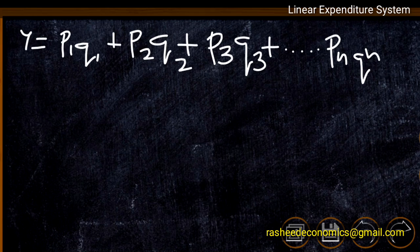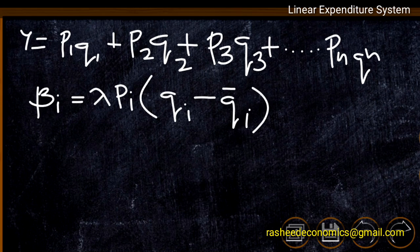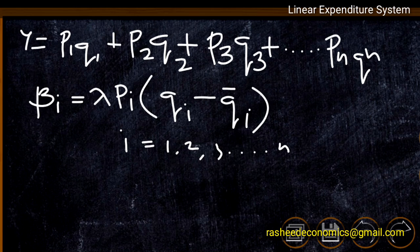Now we are going to derive the demand function from the linear expenditure system. From the income constraint, total income is allotted entirely for consuming groups 1 through n. From this budget constraint we have: beta_i = lambda * pi * (qi - qi_dash), where i = 1, 2, 3, up to n. Beta_i is the marginal propensity to consume for group i commodities — the change in quantity consumed in group i due to a change in income, as shown in equation number 1.